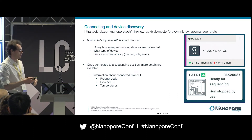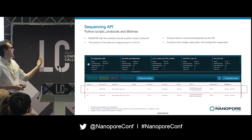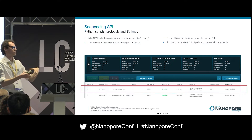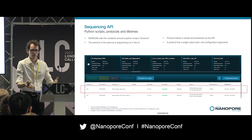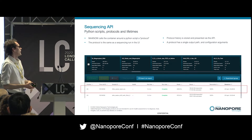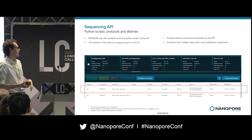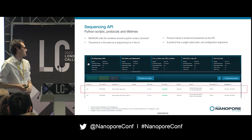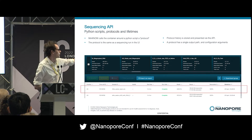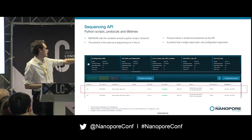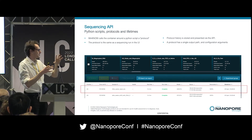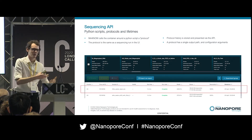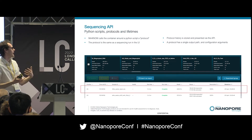So that's all good, but you probably want some more information than that. What I'm going to talk about more specifically today is querying information about protocols you have run. You could start sequencing runs here and do other things with the API, but I'm going to focus on querying sequencing information. To clarify what I mean by protocol — a sequencing run as displayed in the user interface, we refer to as a protocol at the API level.